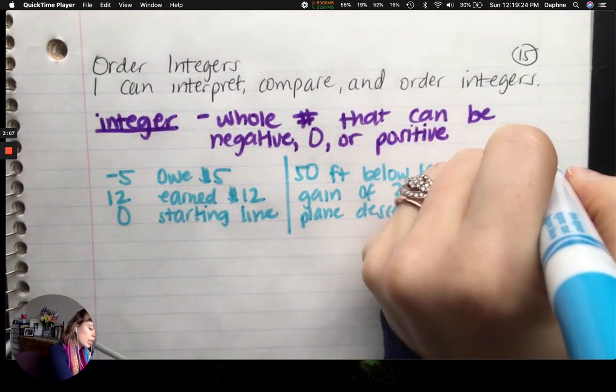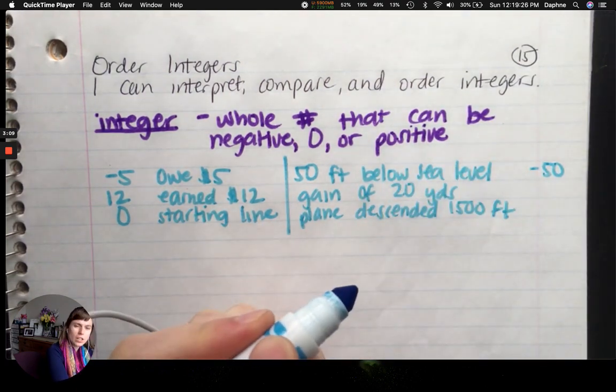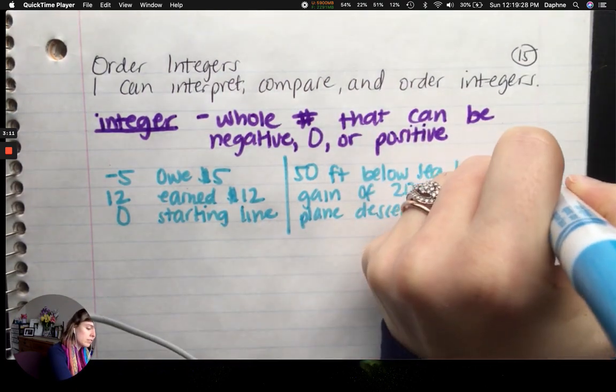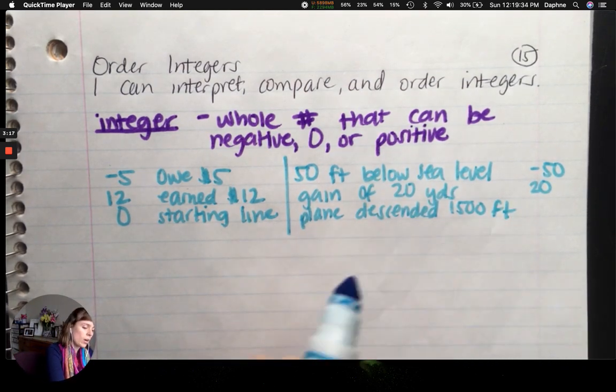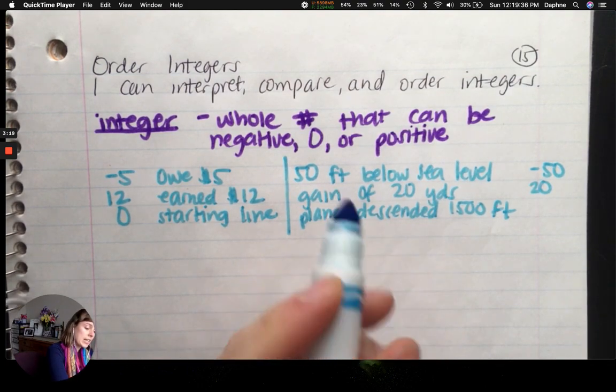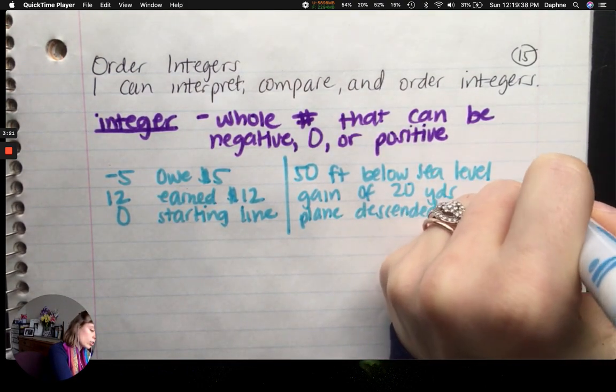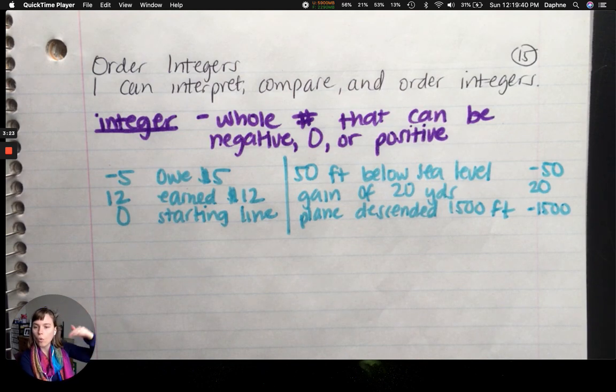So if you're below something, that could be negative fifty feet. A gain is positive. Now the other team has a loss of twenty, so that would be a negative twenty yards. But for the gain, it'd be twenty yards positive. Plane descended, so it's getting closer to the ground farther away from where it was. It went down from where it was. So it's a negative fifteen hundred.